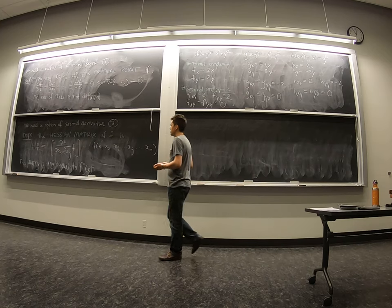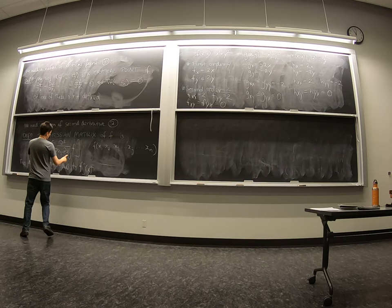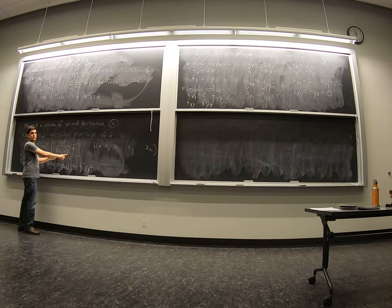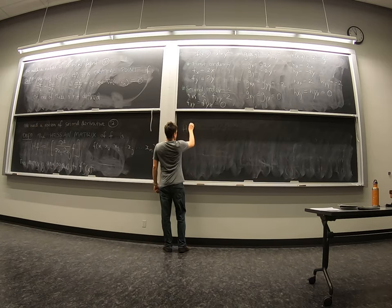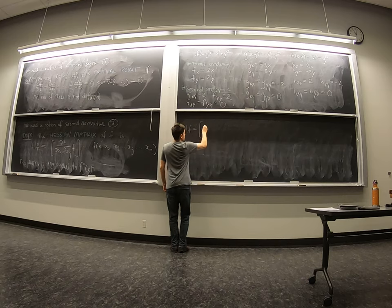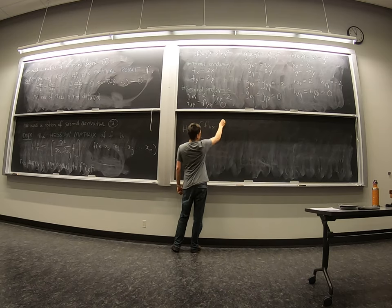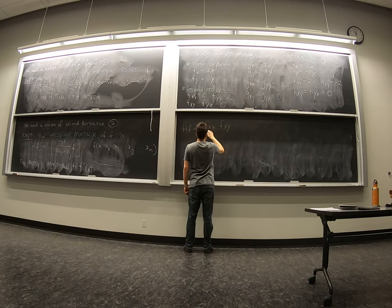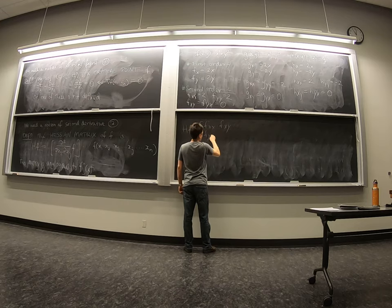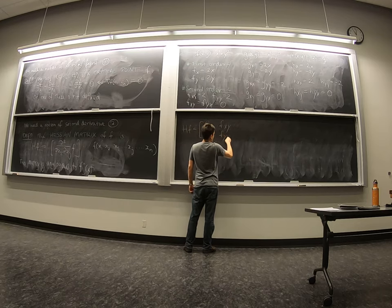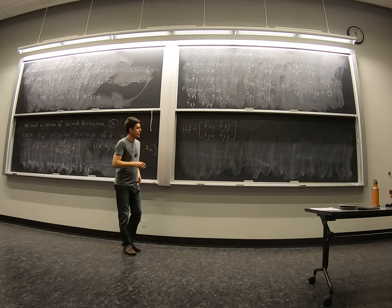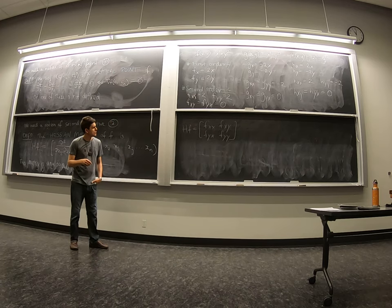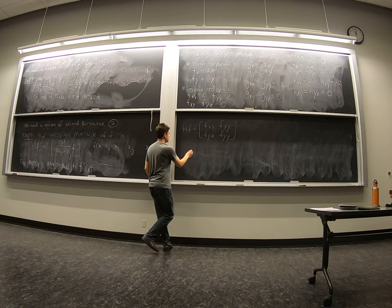Okay, so the Hessian has all the second-order derivatives in it. All right, so h of f looks like this. Okay, so we'll plug in those details.